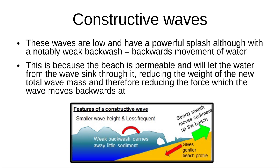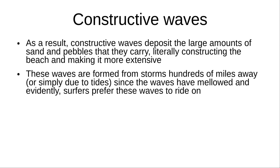The first type of wave is constructive. They are low waves which surge up the shore and spill with a powerful swash. Notably, they have a weak backwash — a weak backwards movement of water. This is because the beach is permeable and will let water from the wave sink through it, reducing the weight of the total wave mass and therefore reducing the force with which the wave moves backwards.